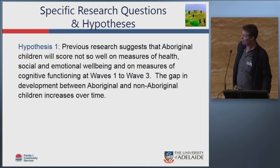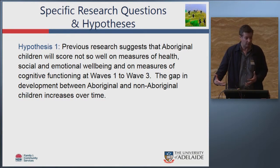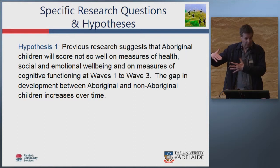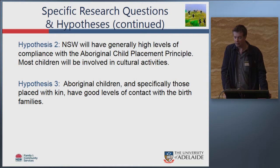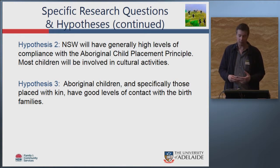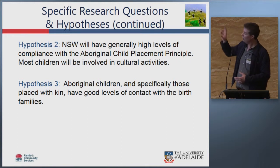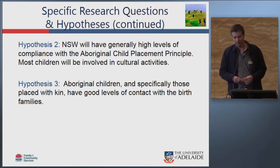Specific hypotheses we can explore in relation to this topic based on the national research include: we might expect Aboriginal children to be doing less well developmentally than non-Aboriginal children; we can look at whether those developmental trajectories widen over time, as community datasets suggest; we can explore the extent to which the Aboriginal placement principle is being addressed by the New South Wales system; and we can look at differences between Aboriginal and non-Aboriginal children in family contact trajectories — whether Aboriginal children are losing contact with their parents over time.